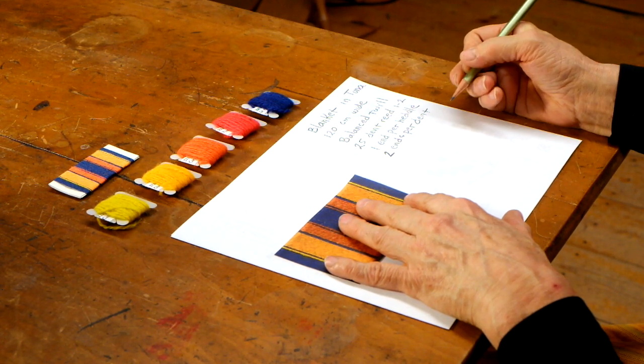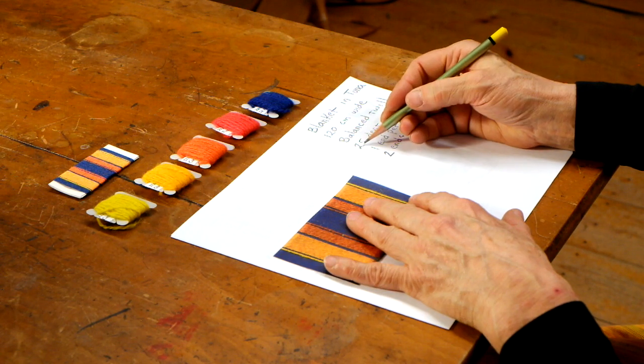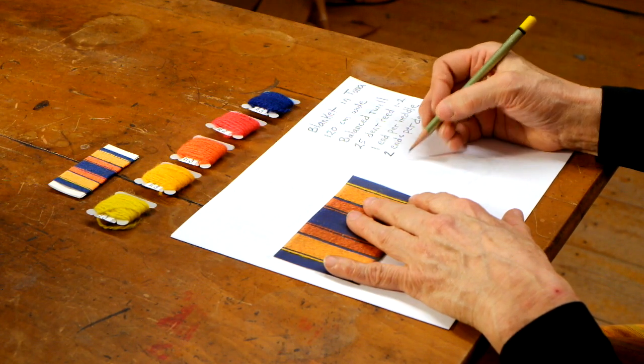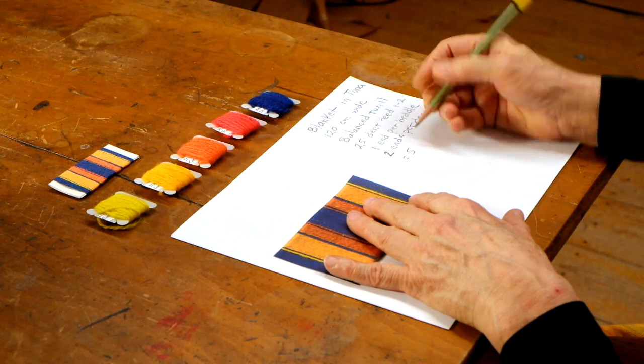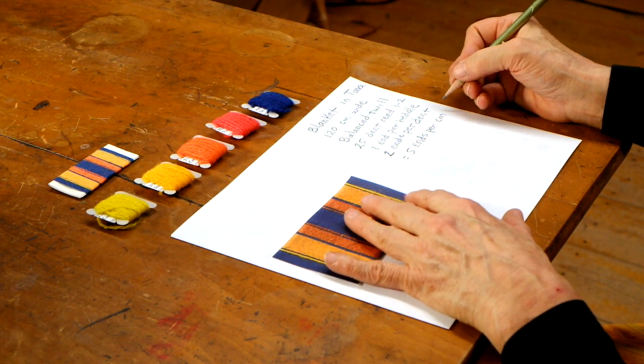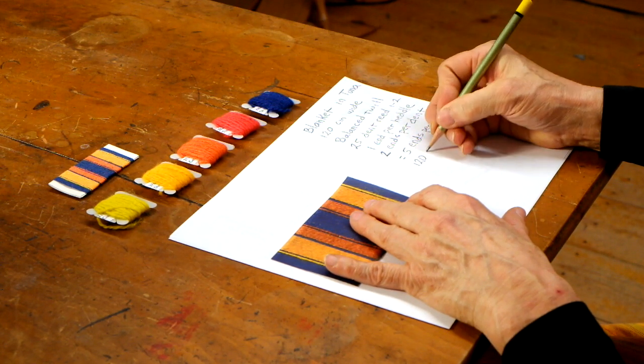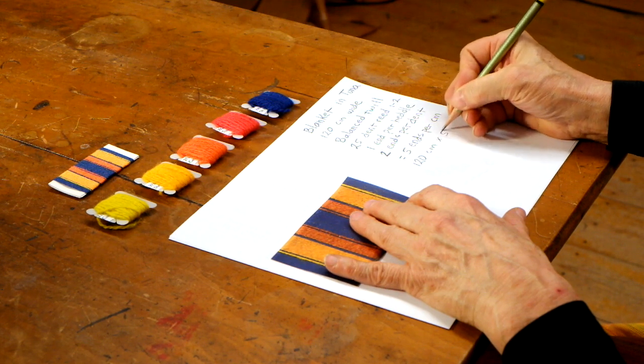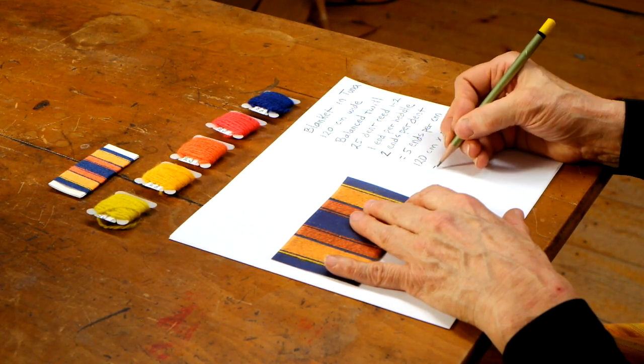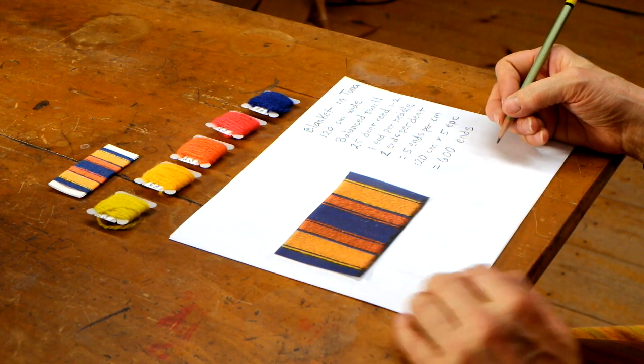That means one end per heddle and two ends per dent. And so if we have two ends in a dent in this 25 dent reed, there's 25 dents in 10 centimeters. So there's 2.5 dents in one centimeter times two ends per dent equals five ends per centimeter. So 120 centimeters wide times five ends per centimeter or EPC. That equals 600 ends. So now we know how many warp ends we need.